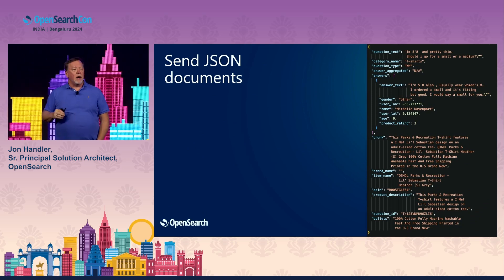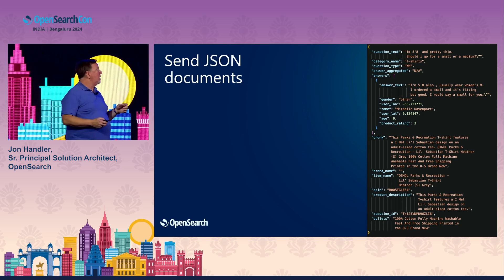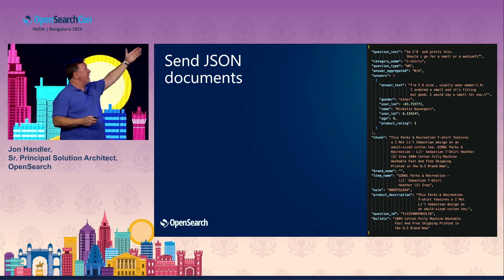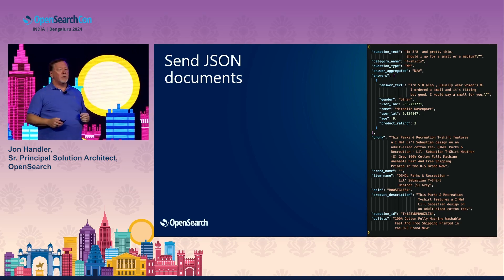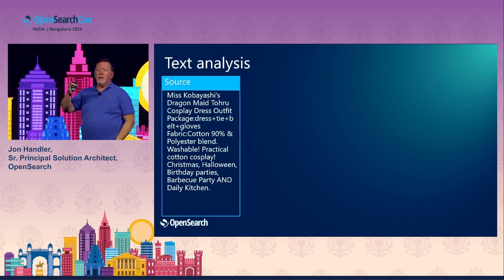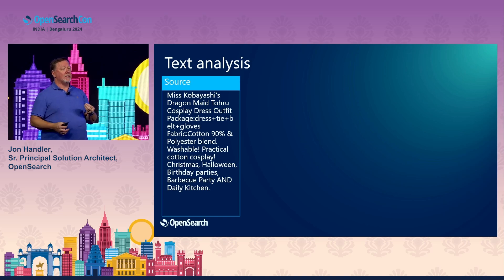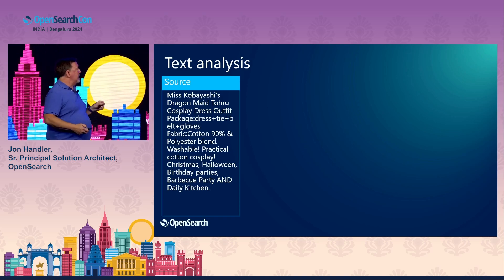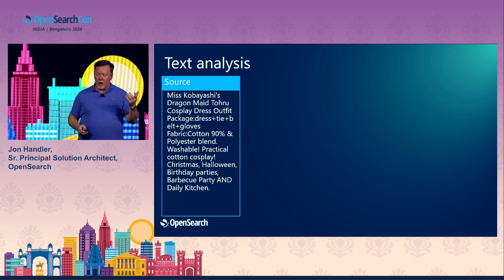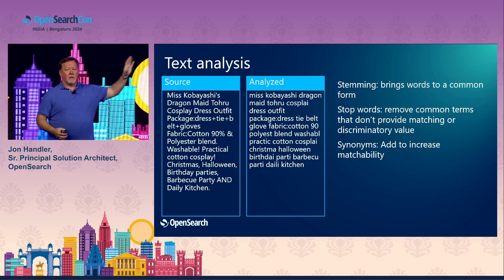With OpenSearch we create JSON documents. This example is from the Amazon product Q&A dataset — a T-shirt with question text, category, question type, answers, chunks, and product descriptions. The first thing we do is analyze that text. In lexical search, for decades, we've been working on means of pulling semantic information through text analysis. This particular example is Miss Kobayashi's Dragon Maid Toru cosplay dress outfit.